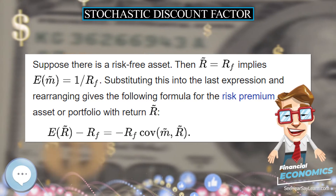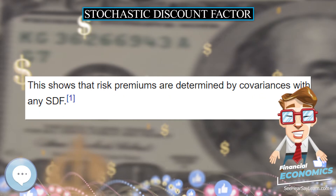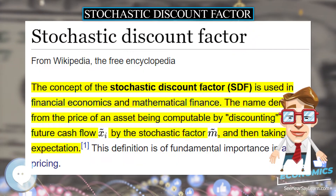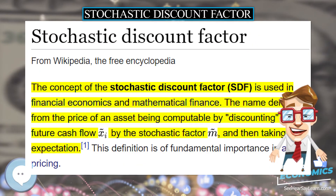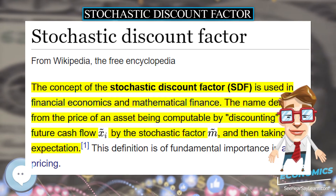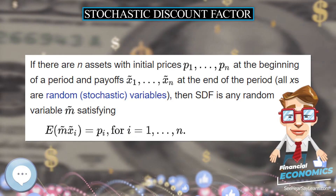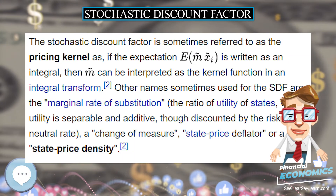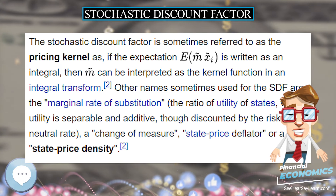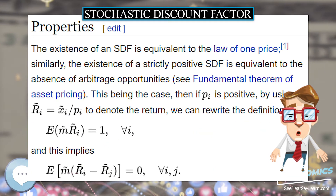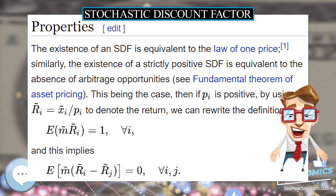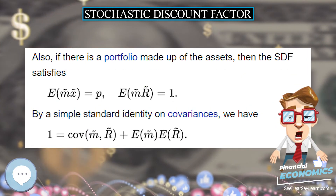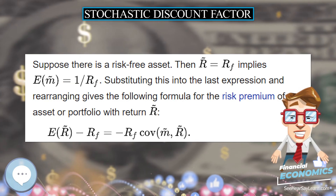This being the case, if P_i is positive, by using R_i = X_i / P_i to denote the return, we can rewrite the definition accordingly. Furthermore, if there is a portfolio made up of the assets, then the SDF satisfies a corresponding equation. By a simple standard identity on covariances, we have a useful covariance relationship.